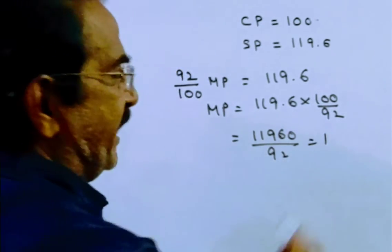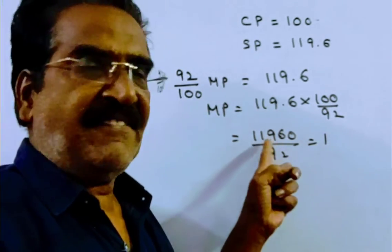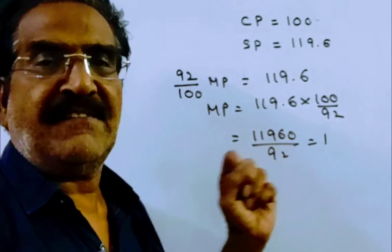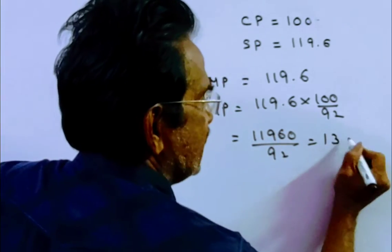This is equal to, once 92, so 27 remains, 27.6, 276, 92 times 3 is 130.